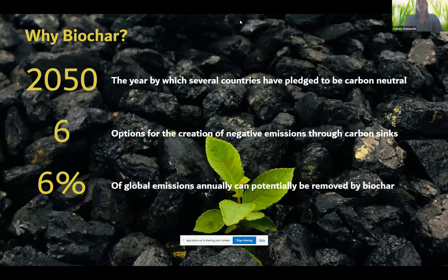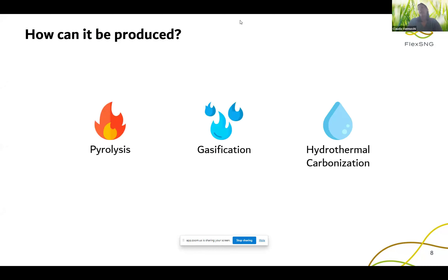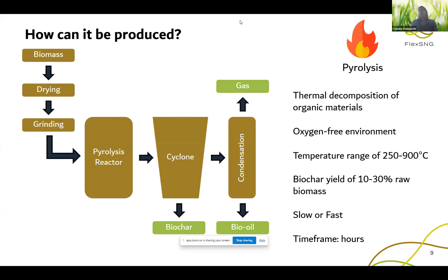Carbon neutral doesn't only mean renewable energy technology or electric mobility, but also actually capturing and storing carbon into different materials and pathways. For that, we have six options for the creation of negative emissions through carbon sinks, and biochar is actually one of the six options. And 6% is the estimate of global emissions that could annually be removed by biochar.